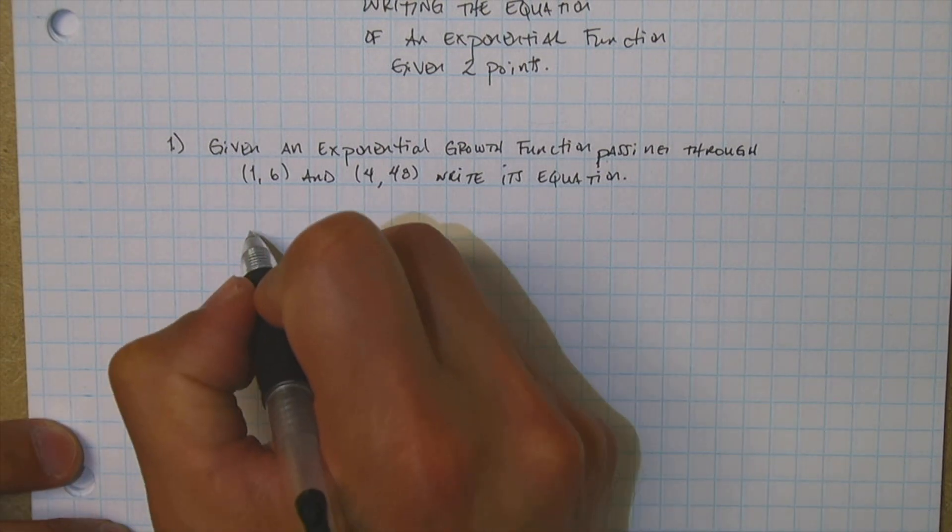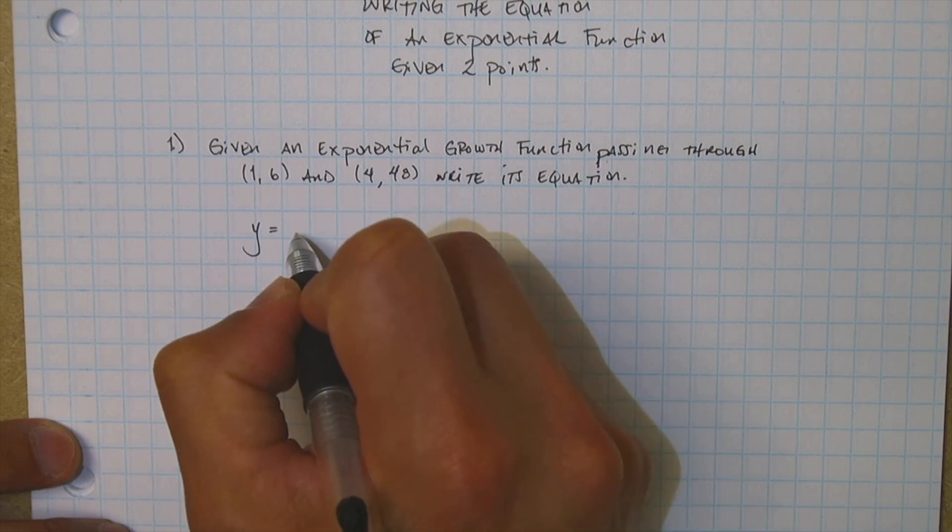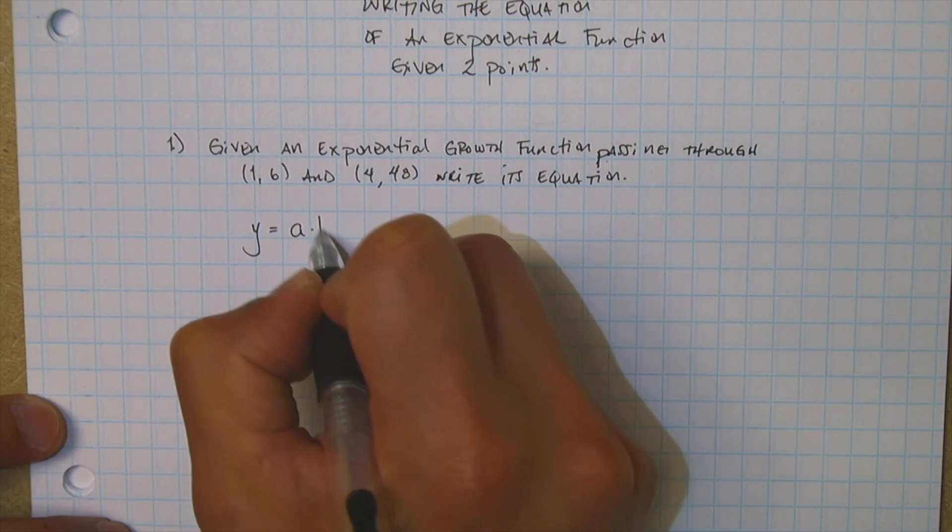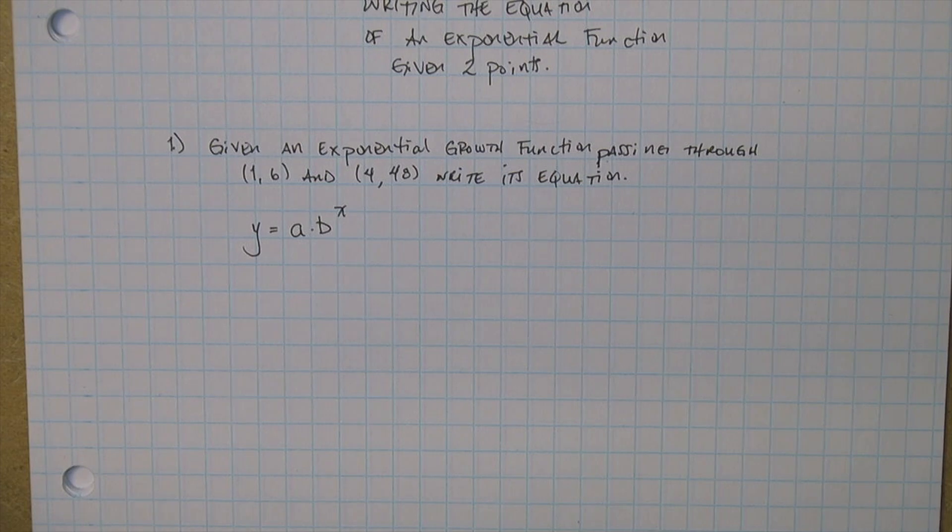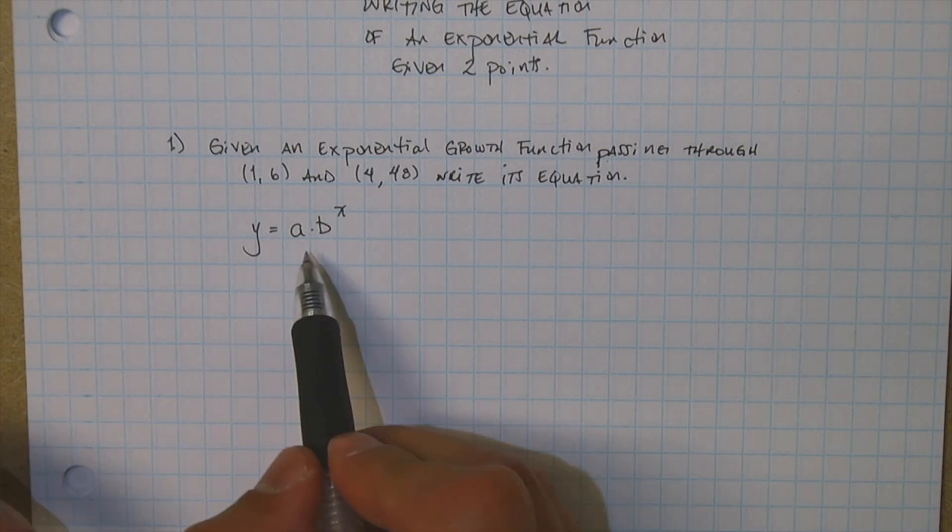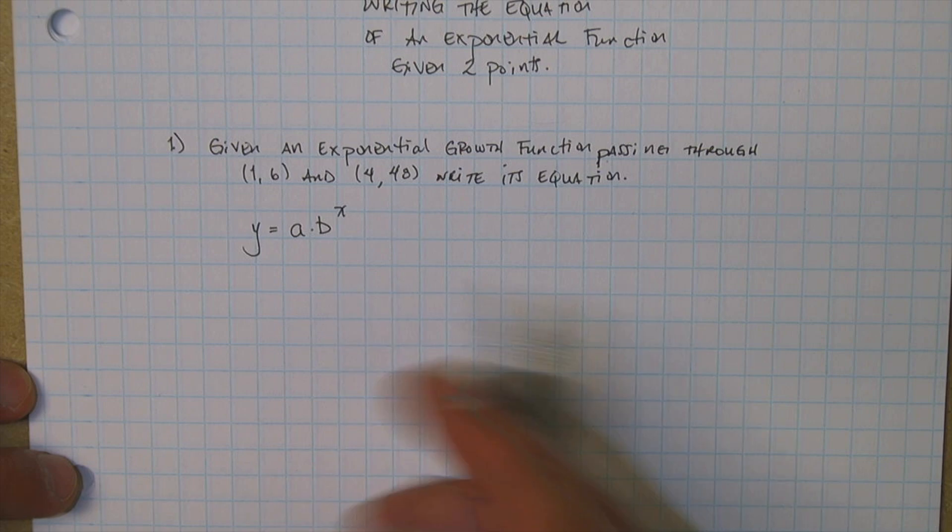Now if you remember, an exponential function is y equals a times b to some power of x. And this is your standard form, this is how it's going to look like. And what they do, they give us two points.